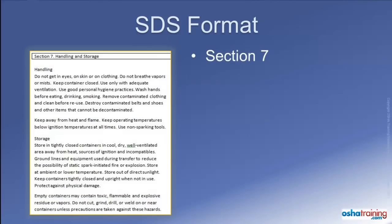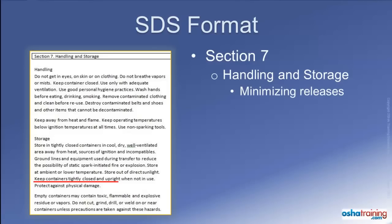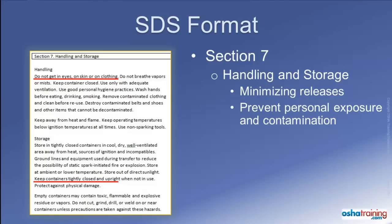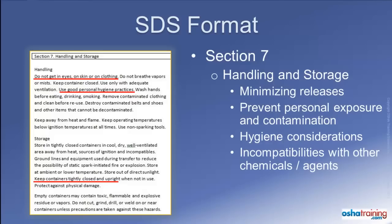Section 7 will provide information pertinent to safe handling and conditions for safe storage of the product. The required information consists of precautions for safe handling to prevent or minimize the release of the chemical into the environment, to prevent exposure or contamination for personnel handling the product, and recommended hygiene practices, such as prohibitions against smoking, eating, or drinking in or near areas where the product is being handled. When the product is being stored, there may be a need to avoid certain incompatible materials or agents such as high heat or water that might cause the product to react.